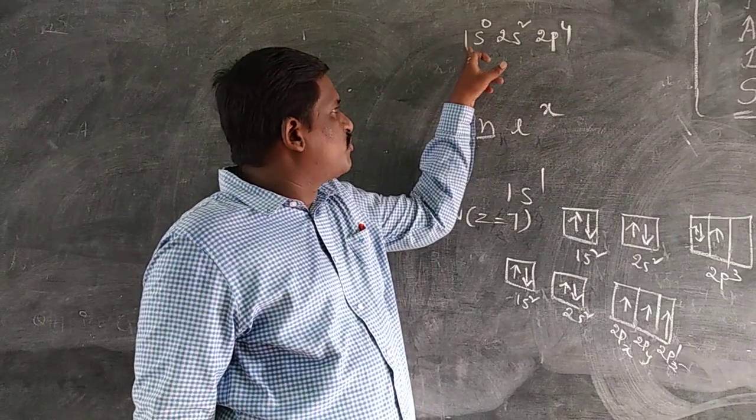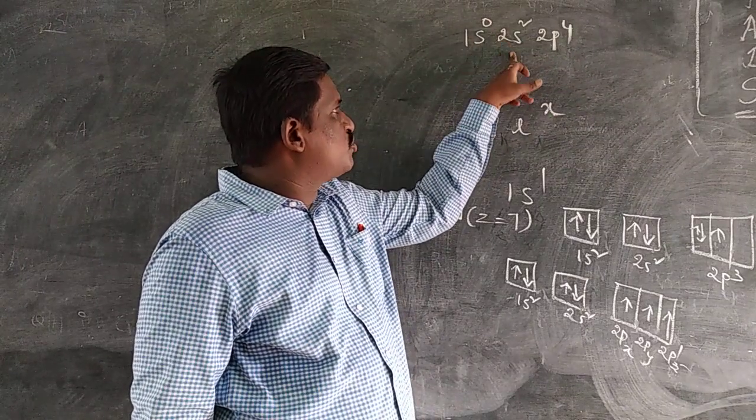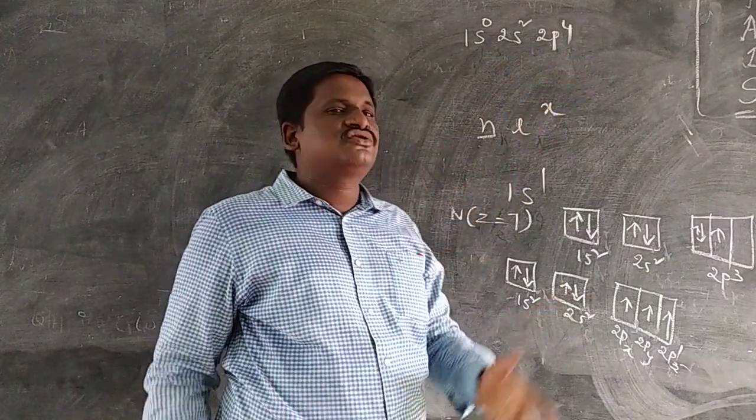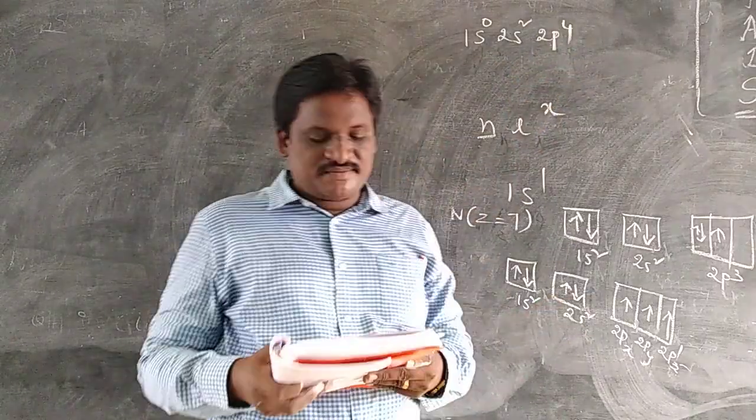For example, consider 1S1, 2S2, 2P4 — which rule is violated here? Hund's rule is violated.